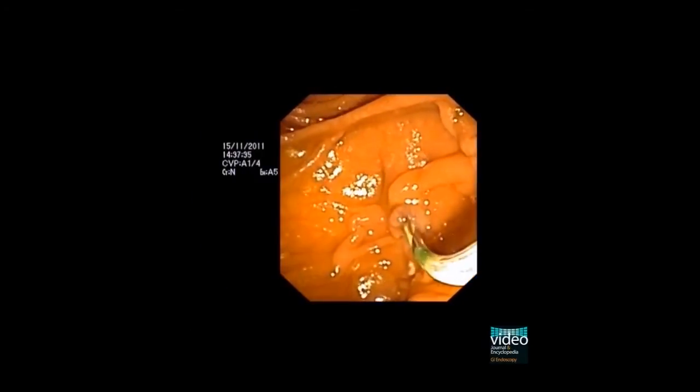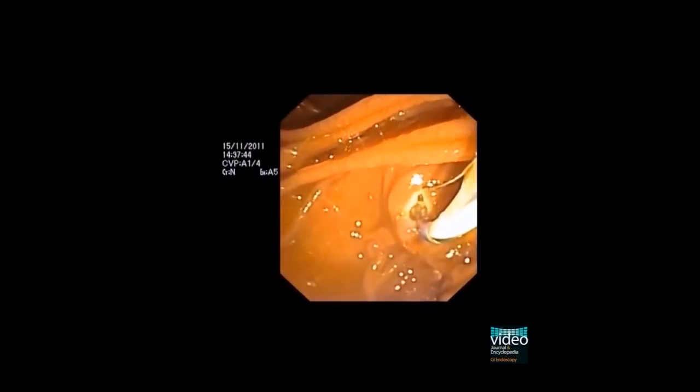Leaving the guide wire in the intra-hepatic ducts, a partial sphincterotomy, towards 1 o'clock, is performed. You see that the cut is carried out until half-length of the papillary roof is cut.